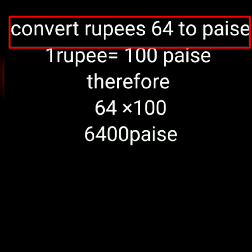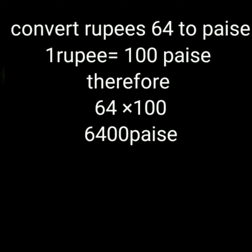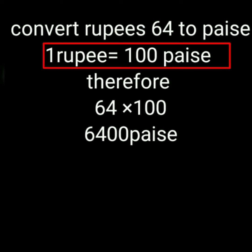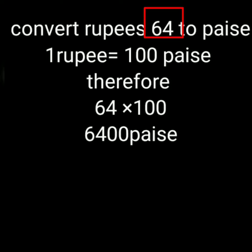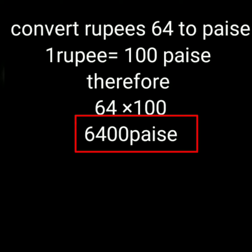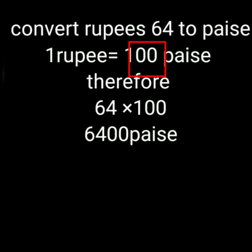Here is the question: convert rupees 64 to paise. So here rupees 64 is given and we have to convert this into paise. As we know that 1 rupee is equal to 100 paise, and here it is 64 rupees, so we have to multiply 64 by 100. So 64 multiplied by 100 will be 6400 paise.